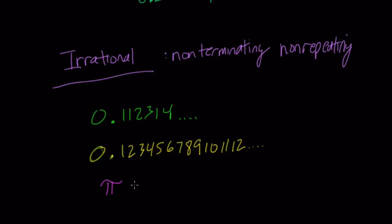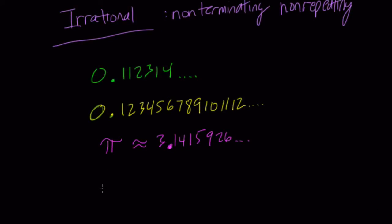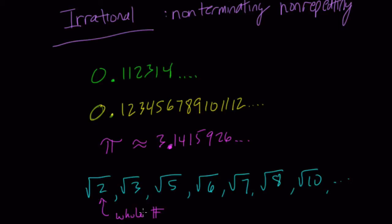Other types of numbers you might see as irrational are π, which is about 3.1415926 and so forth. Don't let them trick you—if they give you a decimal approximation like 3.14, that's not π. You'll see the π symbol. Other irrational numbers are the square roots of non-perfect squares, like √2, √3, √5, √6, √7, √8. These numbers are all irrational.